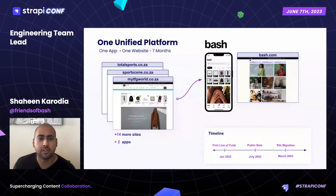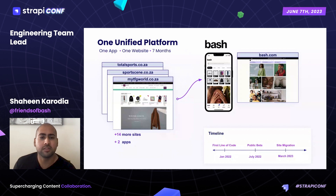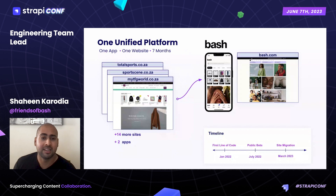Bash did not always exist. The Fushini Group ran a total of 17 individual e-commerce websites and two mobile apps. From January 2022, we embarked on rewriting all these platforms into a single site and app. With such an aggressive timeline of getting Bash to beta in seven months, it left us with a question: all these individual stores still needed a mechanism to visually merchandise their products and promotions on Bash, and they still needed their own home within the Bash platform.